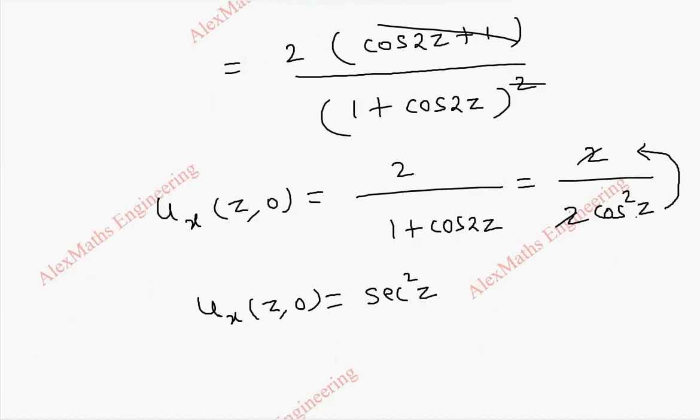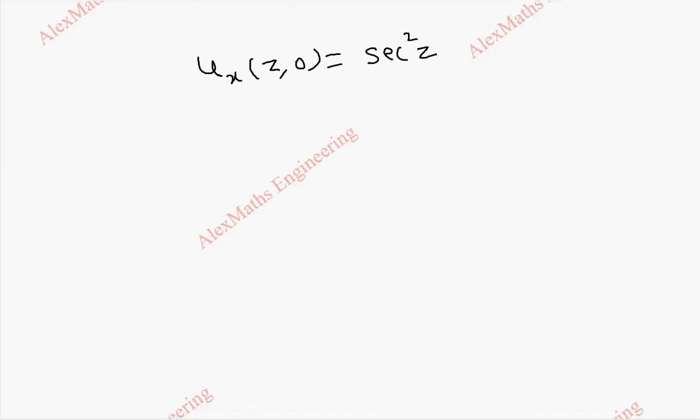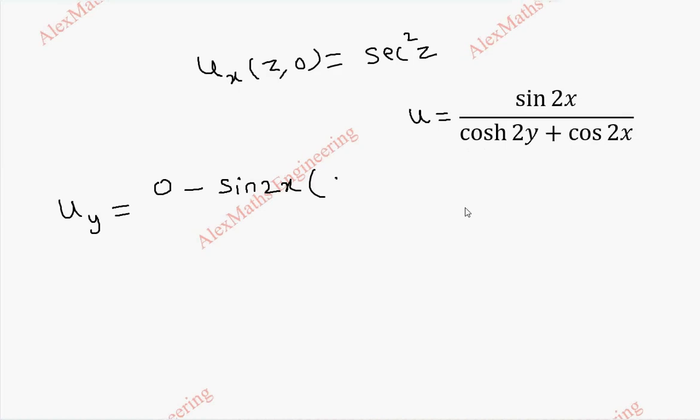Now in the same way we have to find u_y. So I just copied the u term for reference. Now u_y partial derivative, we again follow the quotient rule. Derivative of the numerator is 0 because sin 2x is fully constant and then into this totally anyway to 0 minus. Numerator is kept as it is and derivative of the denominator. This is sinh 2y into 2 and this is minus.